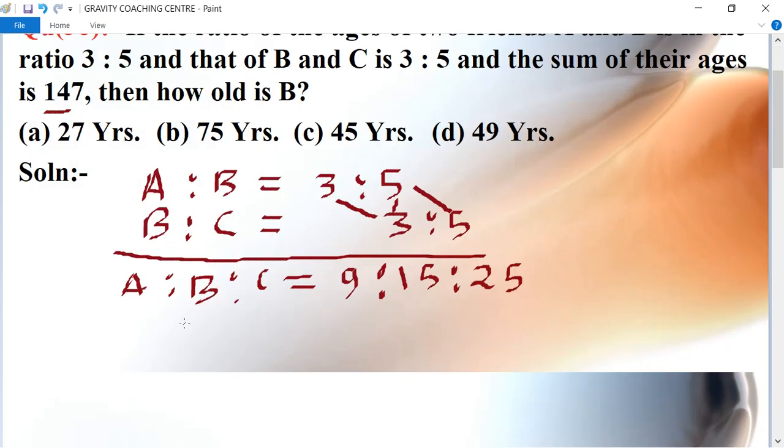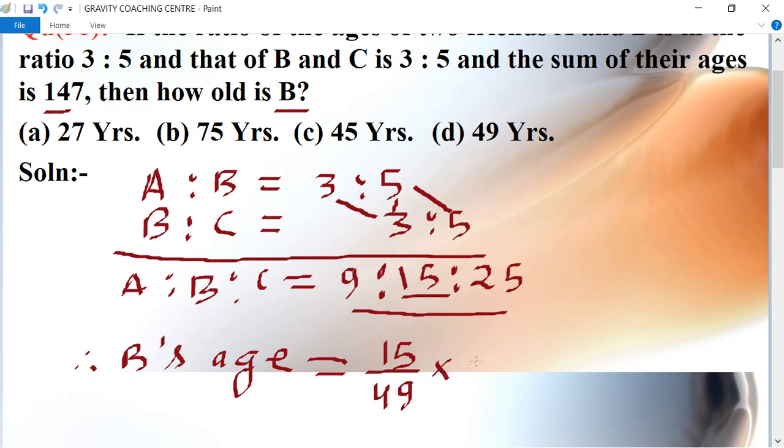So what is the age of B? Therefore B's age is equal to 15 upon the sum of all the three numbers is 49, into the sum of their ages is 147.